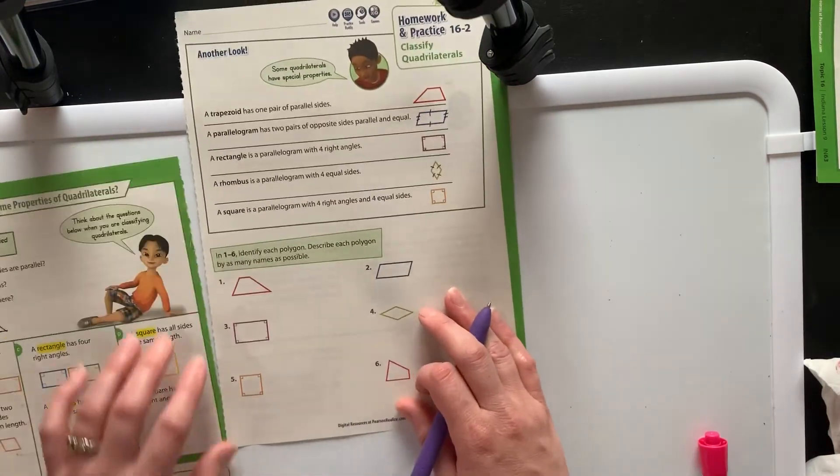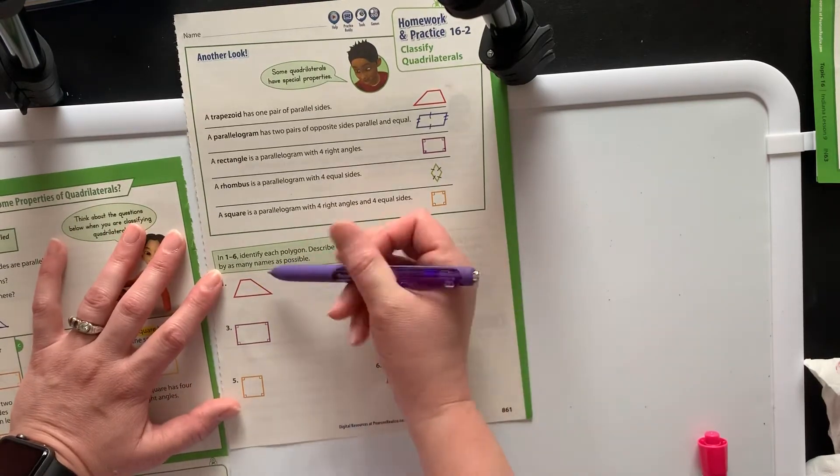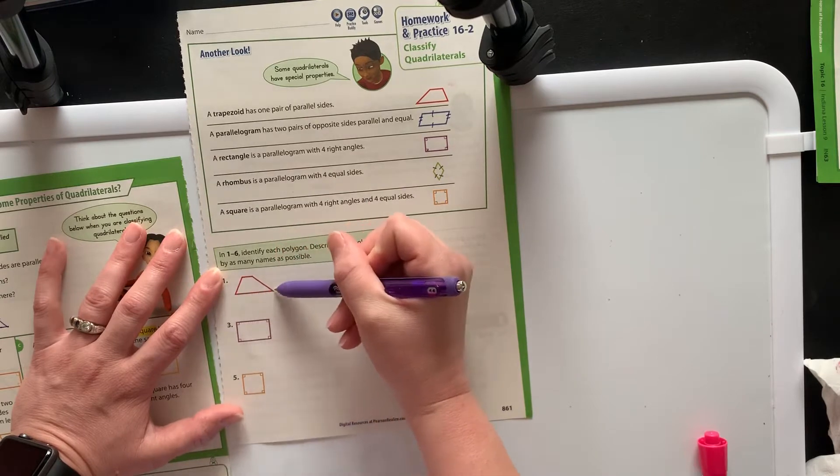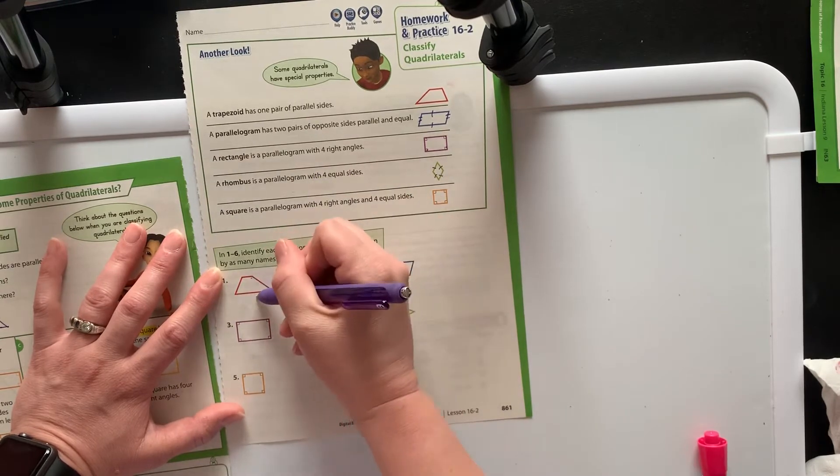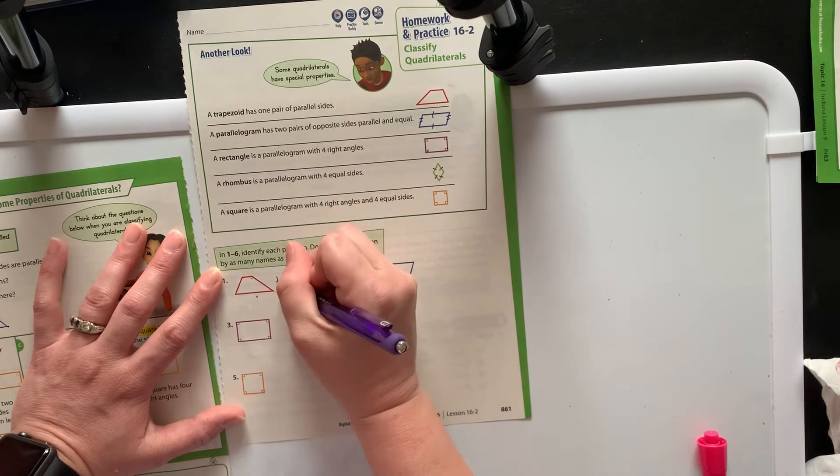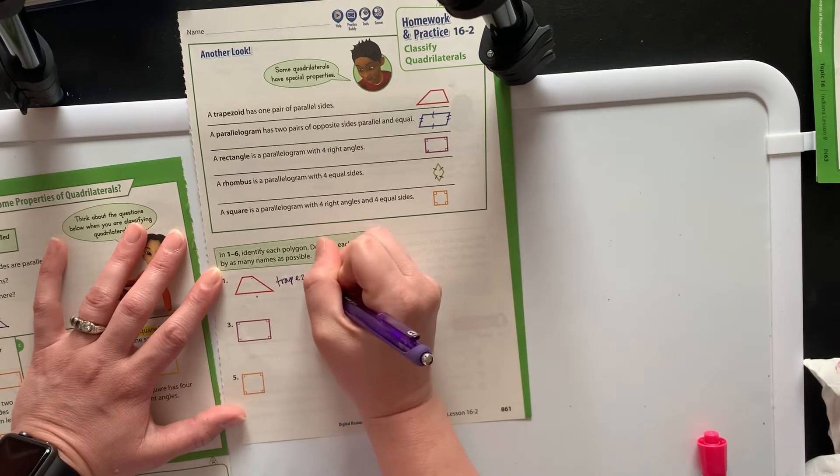So the first thing we're going to do is classify these polygons. When I'm looking at this one, I notice that this line right here is parallel to this line right here. We would call these base 1 and base 2 if we were finding the area of trapezoids. So this is clearly a trapezoid.